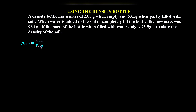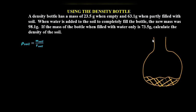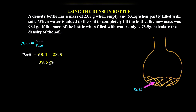Our task is to determine the mass of soil and volume of soil in the density bottle. The density bottle is partly filled with soil. The mass of soil is 63.1 minus 23.5. 63.1 is the mass of the density bottle partly filled with soil — that is, mass of bottle plus mass of soil. The bottle alone weighs 23.5, so the difference gives the mass of soil alone: 39.6 grams.